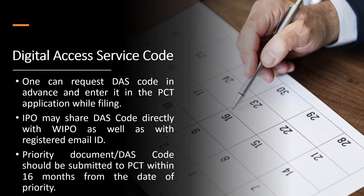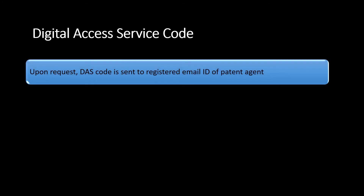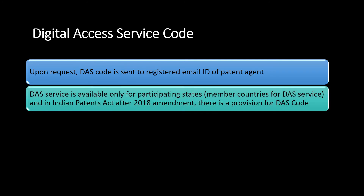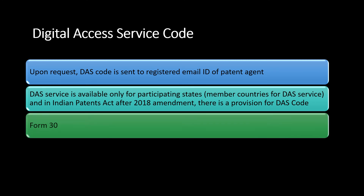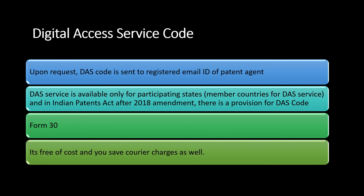The priority document or DAS Code should be submitted to PCT within 16 months from the date of priority. The procedure to obtain a DAS Code is simpler compared to obtaining a priority document. Upon request, the DAS Code is sent to the registered email ID of the patent agent. DAS Service is available only for participating states, that is, member countries. In India, after the 2018 amendments, there is a provision for DAS Code. One can use Form 30 to request a DAS Code, and getting a DAS Code is free of cost — you can also save money on courier charges.